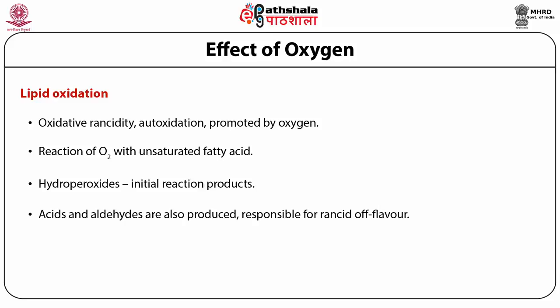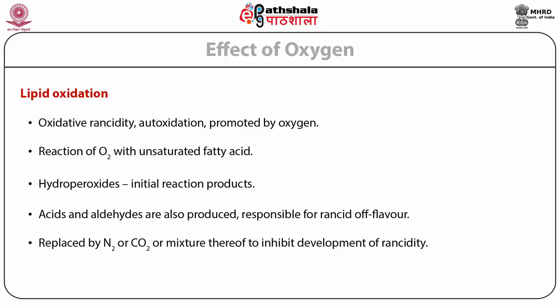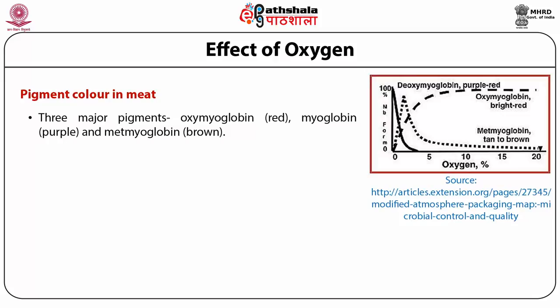Removal of oxygen and its replacement with nitrogen or carbon dioxide, or a mixture thereof, can inhibit development of rancidity. There are three major pigments in meat: oxymyoglobin (red), myoglobin (purple), and metmyoglobin (brown).